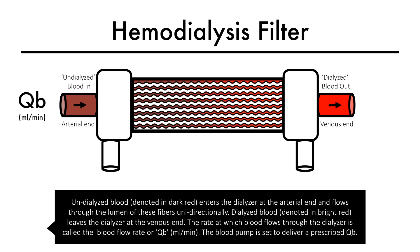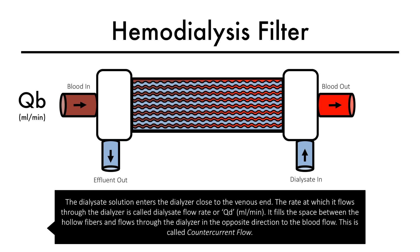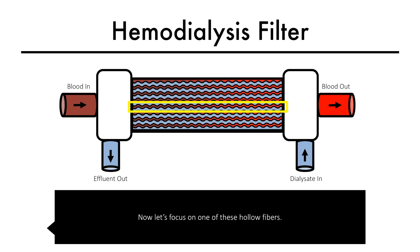The blood pump is set to deliver a prescribed Qb. The dialysate solution enters the dialyzer close to the venous end. The rate at which it flows through the dialyzer is called dialysate flow rate, or Qd, again in milliliters per minute. It fills the space between the hollow fibers and flows through the dialyzer in the opposite direction to the blood flow. This is called counter-current flow.